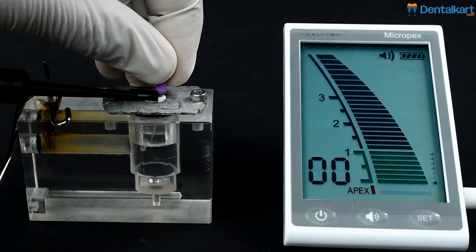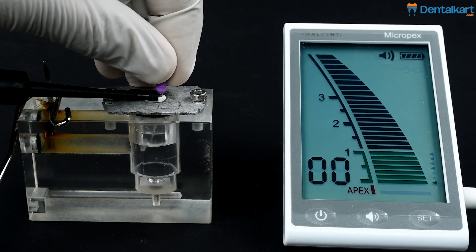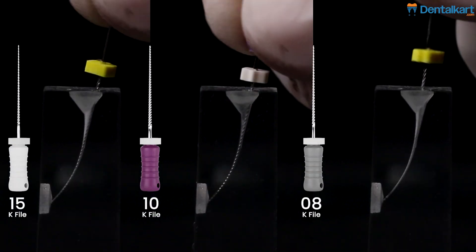Determine the working length accurately, employing an apex locator. Always irrigate the canal and recapitulate with the K file when needed.